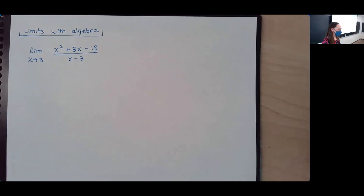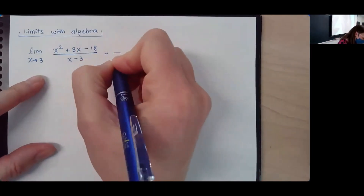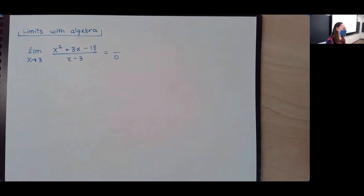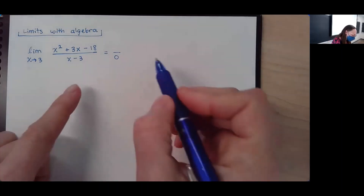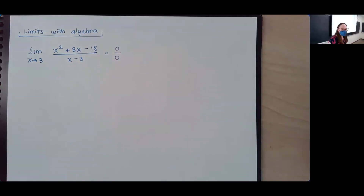I'm generally just going to start by trying to plug in the x value. The bottom part is 0. What do you get when you plug in 3 on top? I know we can't divide by 0, but in calculus, this just means we have more work to do. So what do we get on the top? 0. And 0 over 0 is one of our most popular and interesting limit questions in calculus.